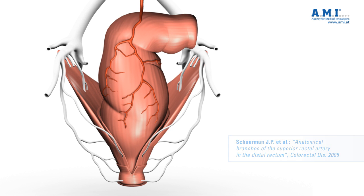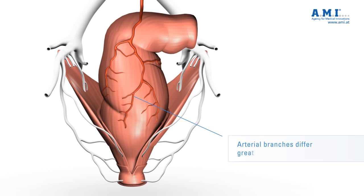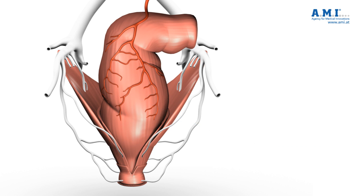Here it can also be seen that the number of smaller arterial branches in the corpus cavernosum recti differ greatly from patient to patient. The same also goes for the position of the rectal arteries in the hemorrhoidal cushions. In summary, it can be said that neither the number nor the position of the rectal arteries is predictable.